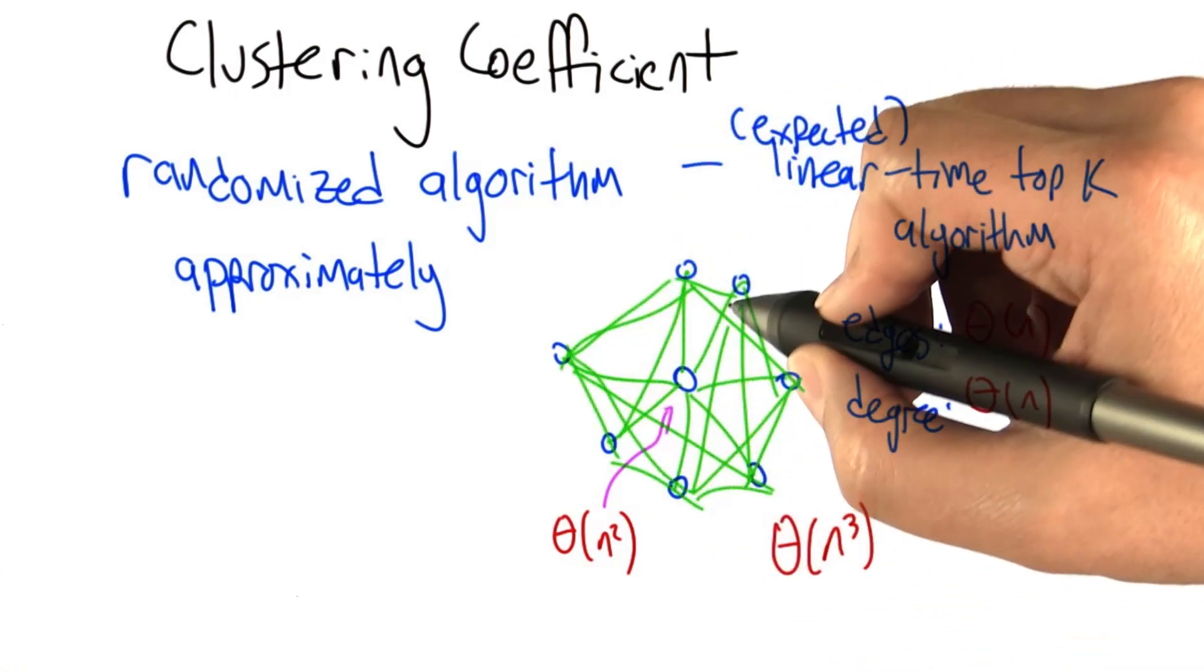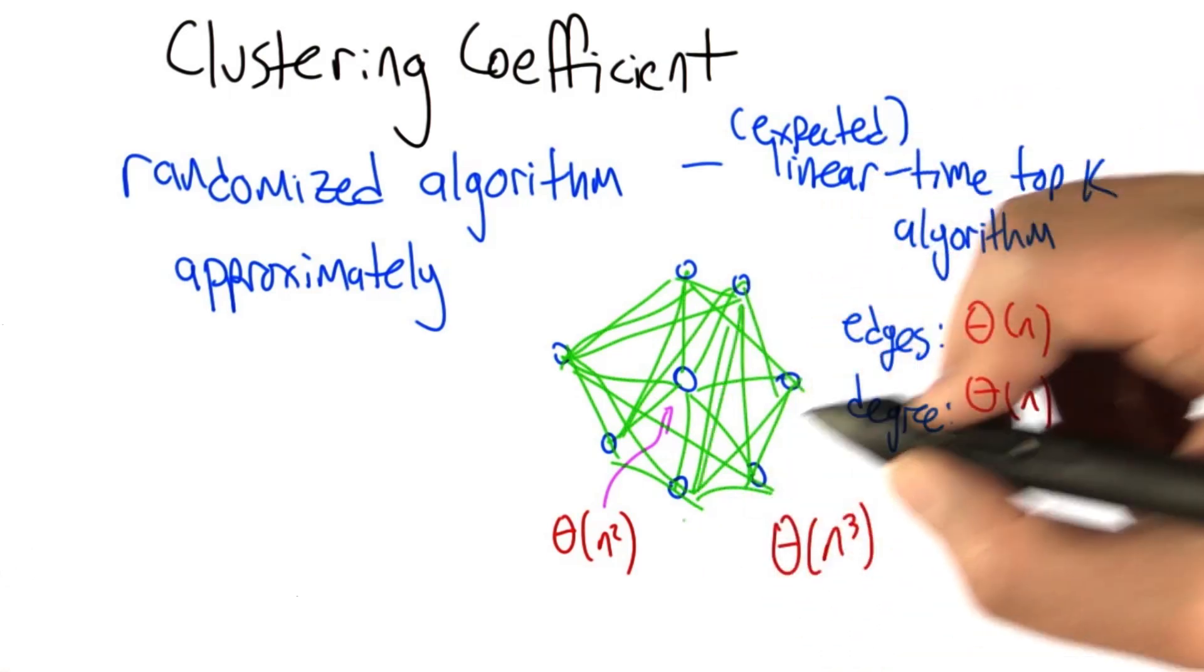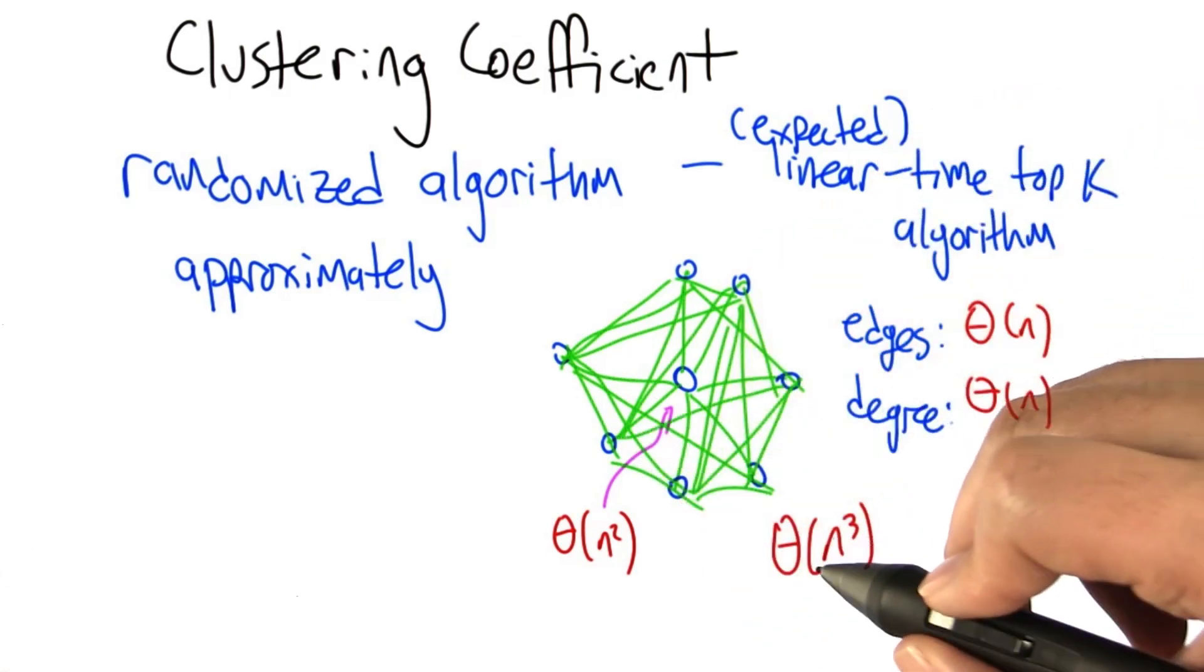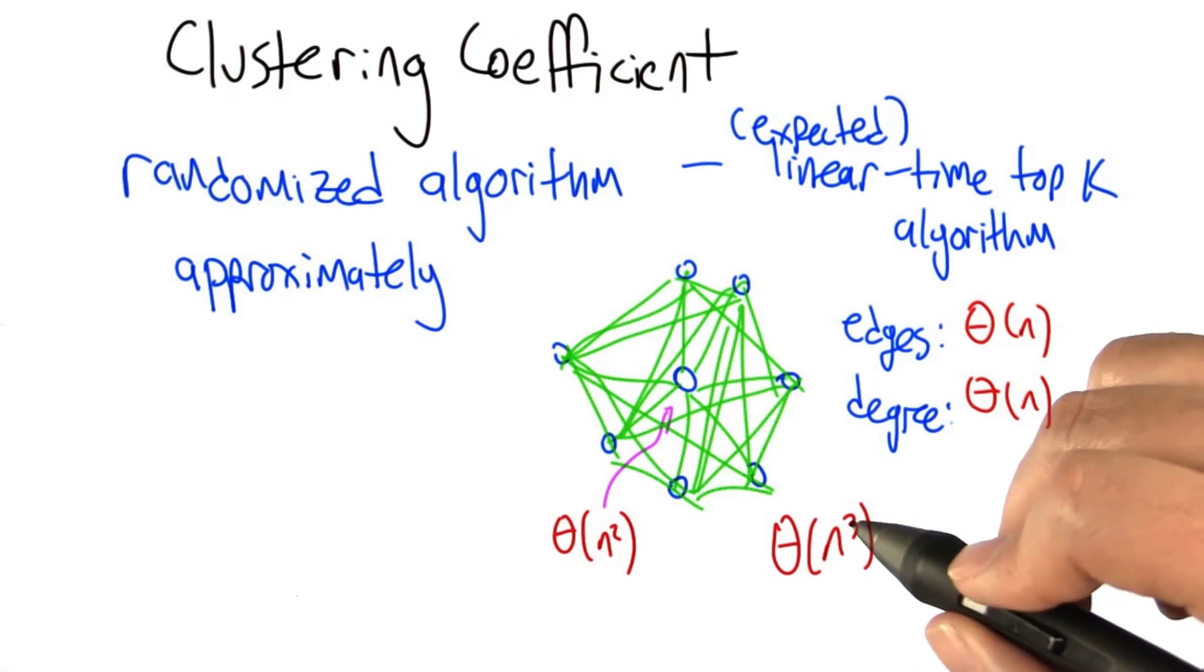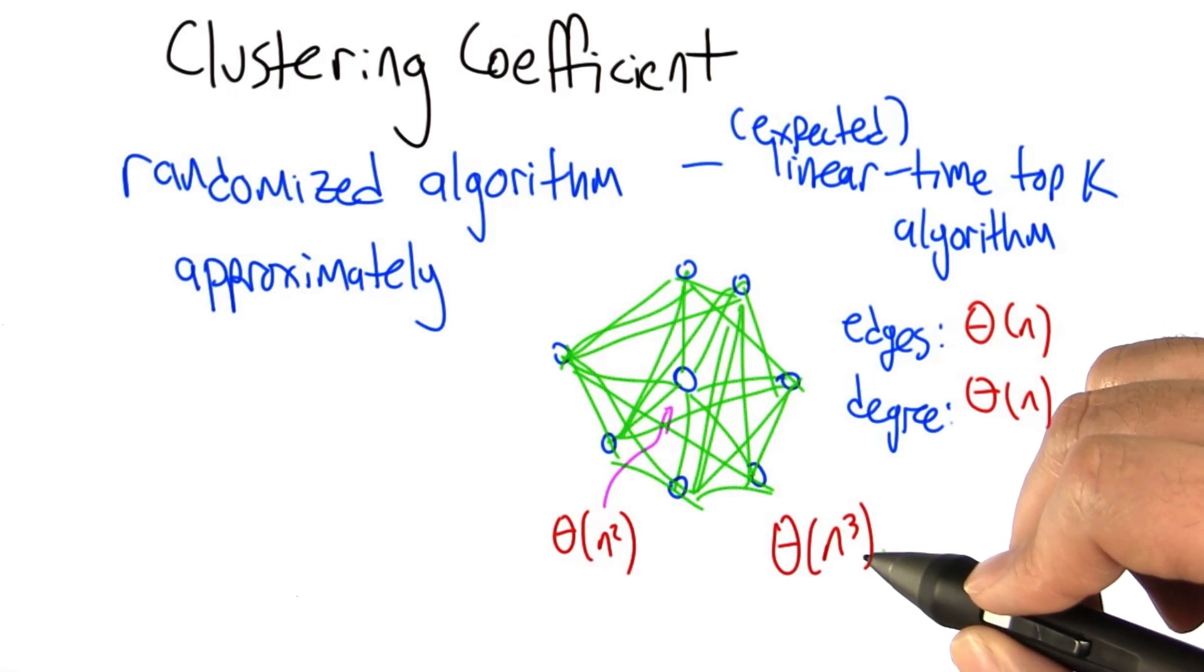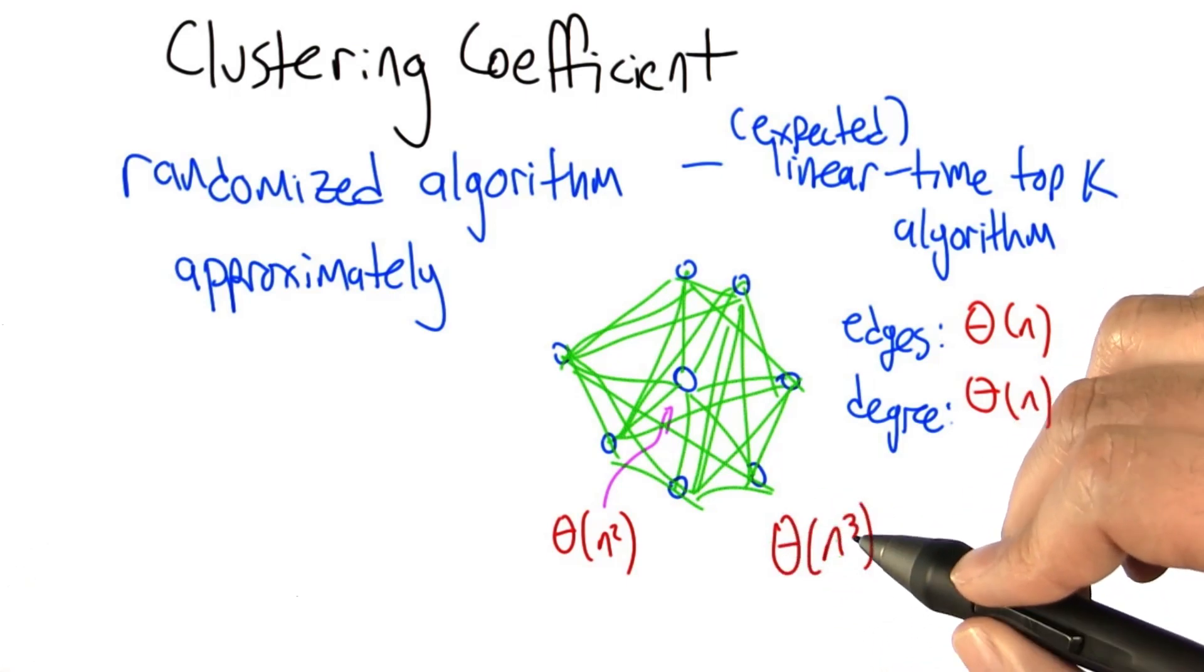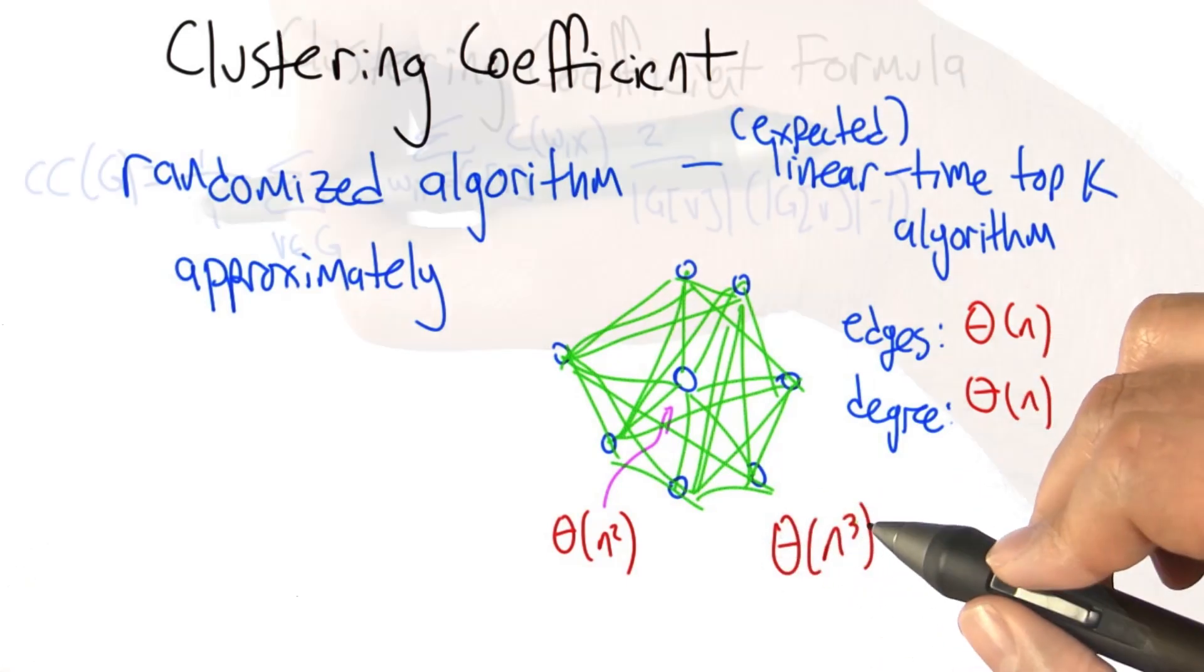If this is actually a densely connected graph like a clique, we're talking about n squared for each of the nodes in the graph, which totals up to n cubed. And n cubed, for something like the Marvel Comics graph where you have 6,000 nodes, 6,000 cubed is a pretty substantial number even by current computing standards. So we'd like to have a way of getting a pretty good answer in time a lot less than this.